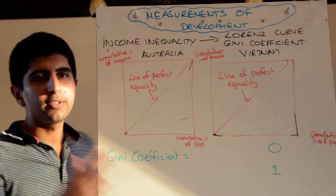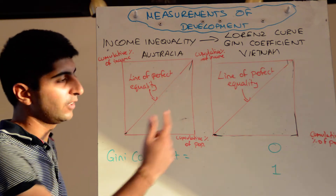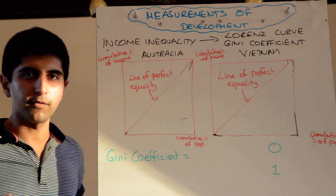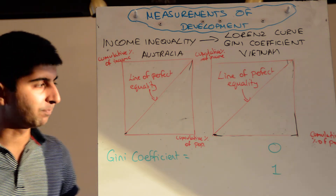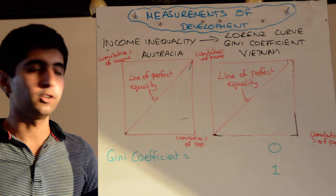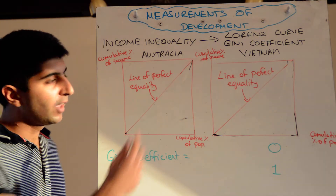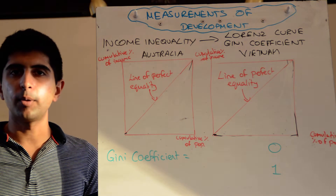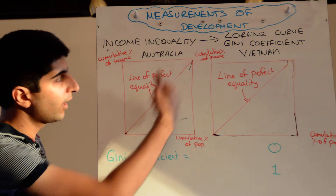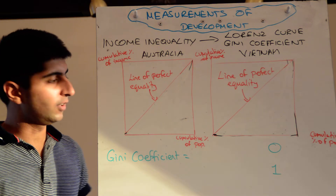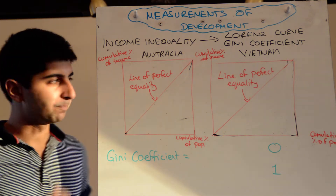The diagonal line represents perfect equality. It represents a direct relationship between population and the amount of income. So basically, 10% of the population will earn 10% of the income. According to this line, 50% of the population will earn 50% of the income, and so on. This line represents the direct relationship between population and income.